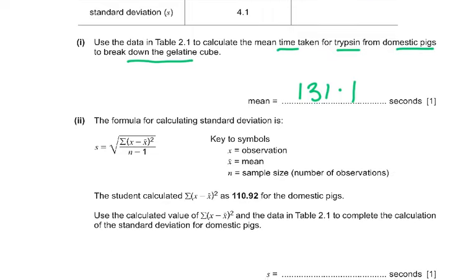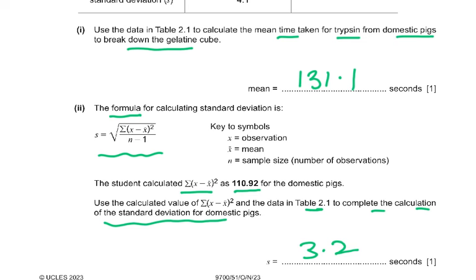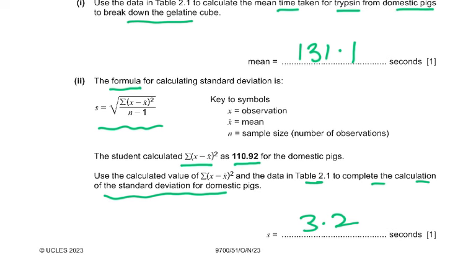The formula for calculating the standard deviation is given — it will always be provided. The student calculated the value of Σ(x − x̄)² as 110.92. Using this value to complete the standard deviation calculation for domestic pigs: n minus 1 equals 12 minus 1, which is 11. Dividing 110.92 by 11 and then taking the square root gives a standard deviation of 3.2. Don't forget to take the square root as well.